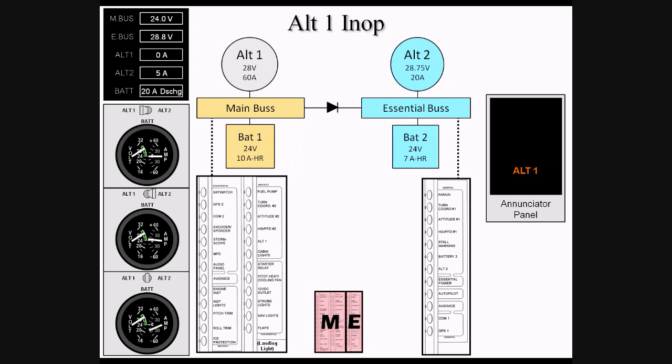A flashing Alt-1 caution indicates that Alt-1 is putting out more current than it is rated for. As BAT-1 is now powering most of the items in the aircraft, as well as most of the high draw items in the aircraft, it is important that we load shed or reduce the drain on BAT-1 as soon as possible.